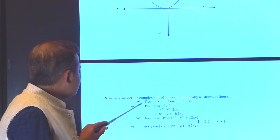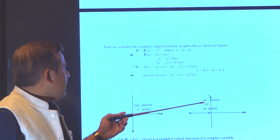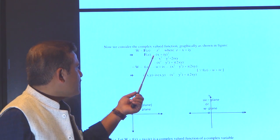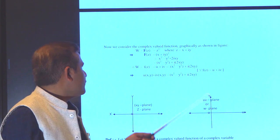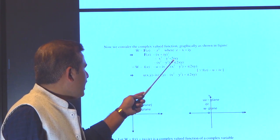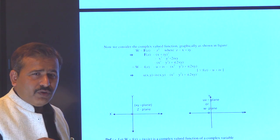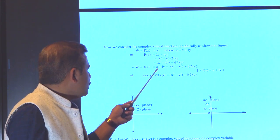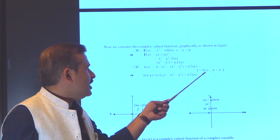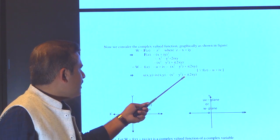Now, let us consider complex valued functions graphically as shown in the figure. Here w = f(z) = z². As we know, z = x + iy. So f(z) = (x + iy)² simplifies to x² − y² + 2ixy. Therefore the complex function w = f(z) = u + iv = x² − y² + i(2xy), giving us u(x,y) = x² − y² and v(x,y) = 2xy.